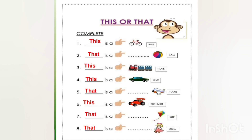Here are a few sentences to practice. This is a bike. That is a ball — the ball is far away. This is a train — the train is near. This is a car. That is a plane — the plane is far away. This is a go-kart — the go-kart is near to us.